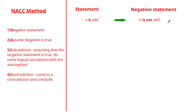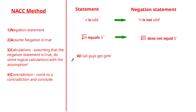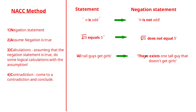Another statement: 'the square root of 20 equals 5' — the negation is 'the square root of 20 does not equal 5.' Now consider: 'all tall guys get girls.' An easy negation would be 'no tall guys get girls,' but remember the main reason for using the negation is to make the proof quicker. Proving that no tall guys get girls is a lot harder than proving there exists one tall guy that doesn't get girls.